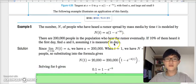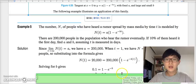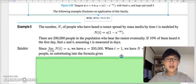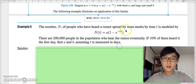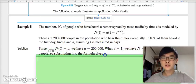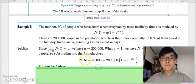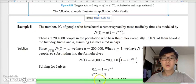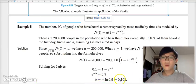Let's move on to example number 5. The number of people who have heard a rumor spread by mass media by time t is modeled by n(t) = a(1 - e^(-bt)). There are 200,000 people in the population who hear the rumor eventually. If 10% of them heard it the first day, find a and b assuming t is measured in days. If the value of t approaches infinity, then this becomes a, which equals 200,000. Therefore, the value of a is 200,000, and on the first day, 20,000 people have heard of it. When we compute these values inside this formula, we may find the value of b which equals 0.105.